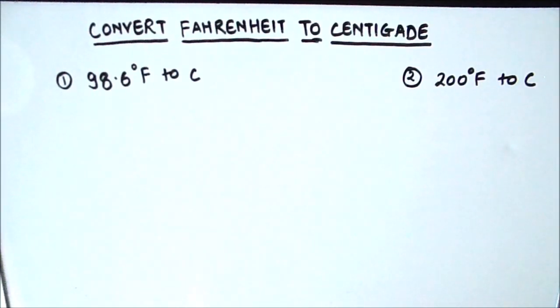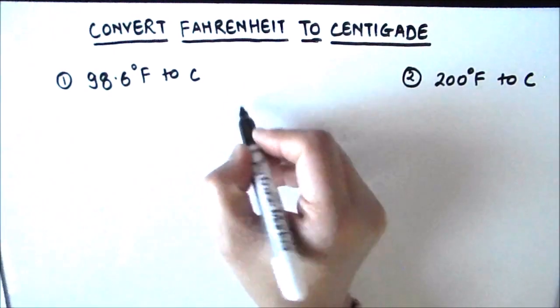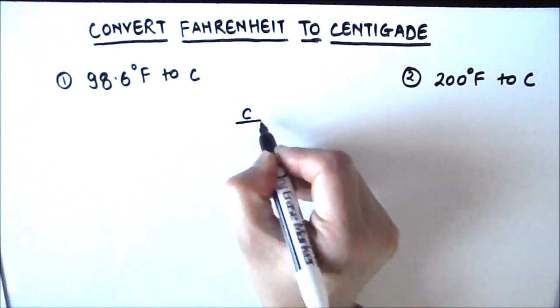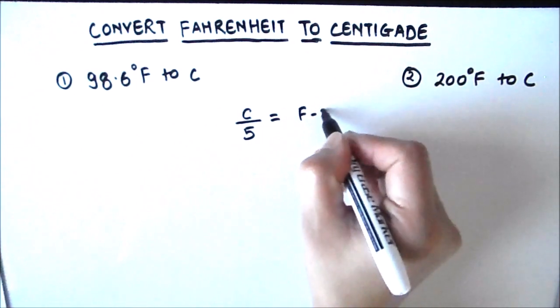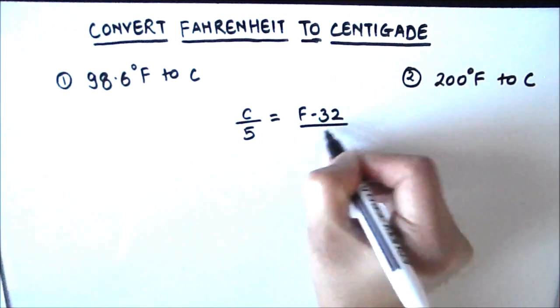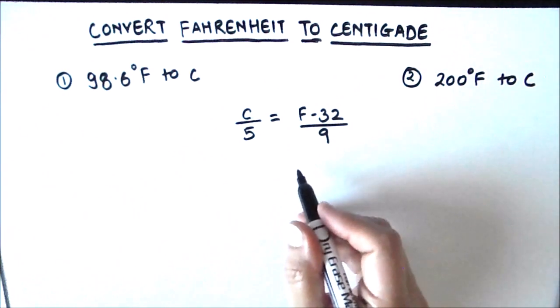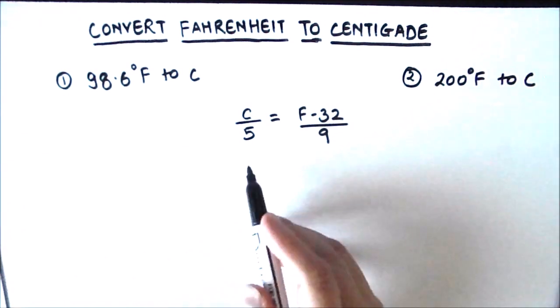Hello students, in this video we are going to learn how to convert Fahrenheit to centigrade. We will be discussing two examples in the video. To convert from Fahrenheit to centigrade, we will be using the formula C upon 5 is equal to F minus 32 upon 9.